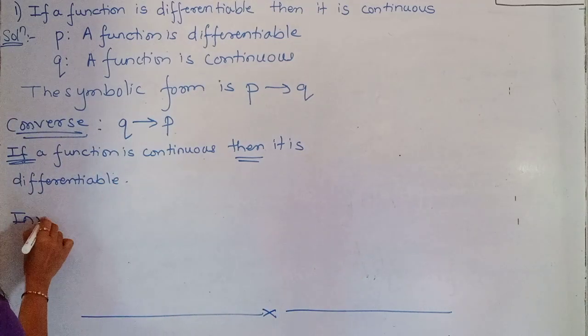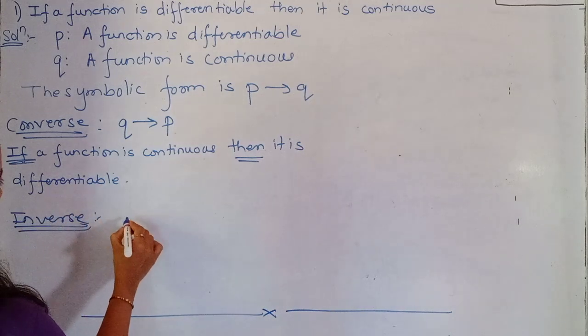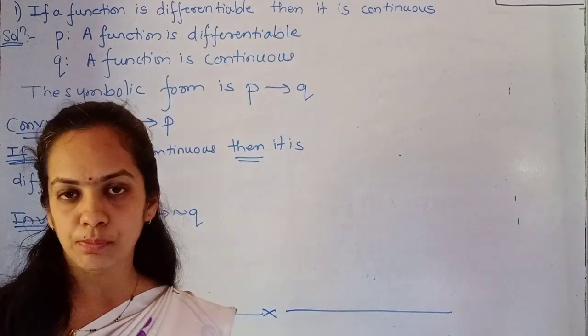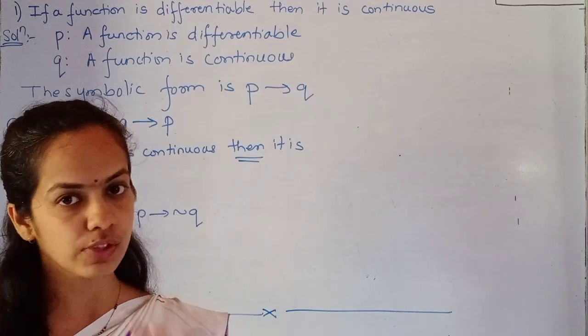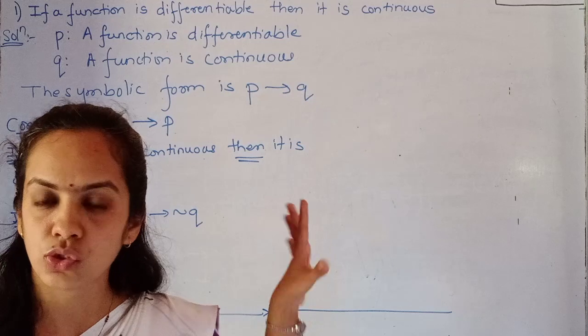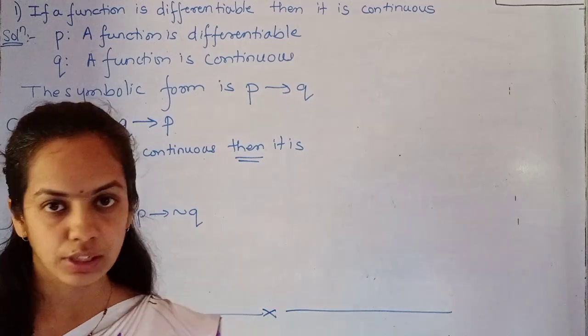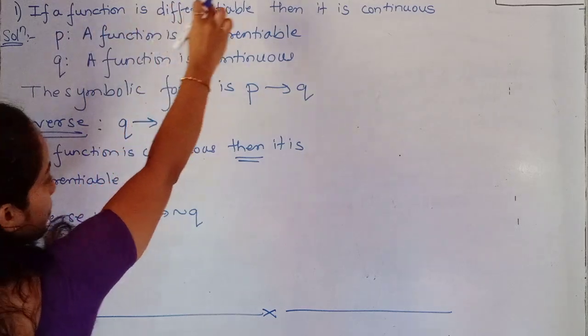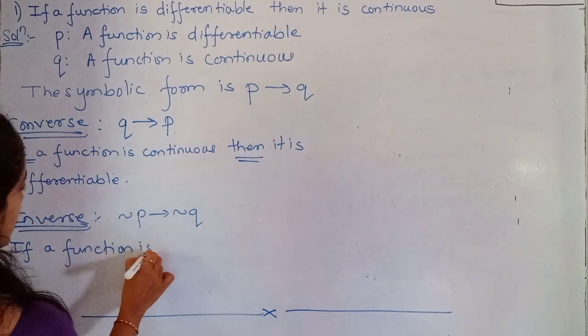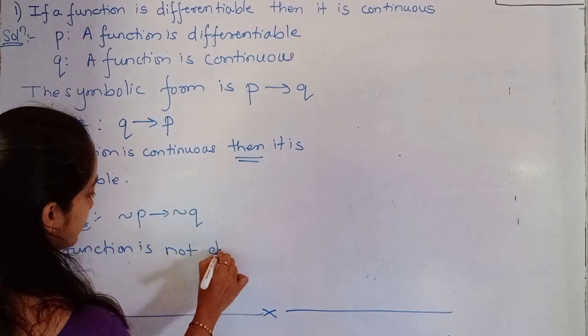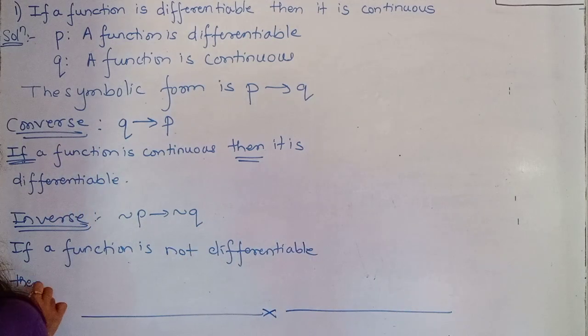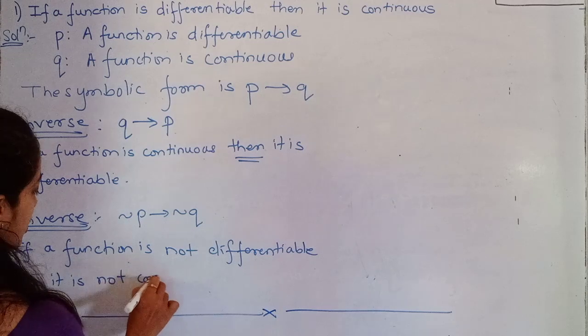Next, for inverse, the symbolic form is negation P implies negation Q. This is very simple. For the question that is given, we have to put 'not' in both statements. If a function is not differentiable, then it is not continuous. Very simple.